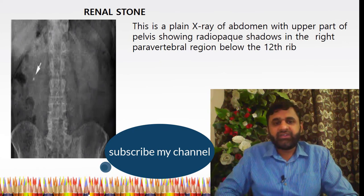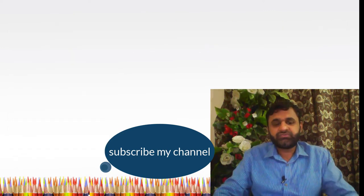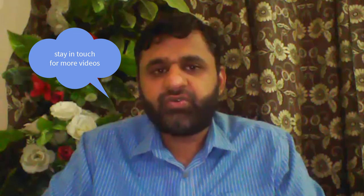This is a plain X-ray of the abdomen with the upper part of the pelvis showing a radio-opaque shadow in the right para-vertebral region below the 12th rib, as seen in renal stones. What percentage of gallstones and kidney stones are radio-opaque? About 10 percent of gallstones are radio-opaque, and 90 percent of kidney stones are radio-opaque.